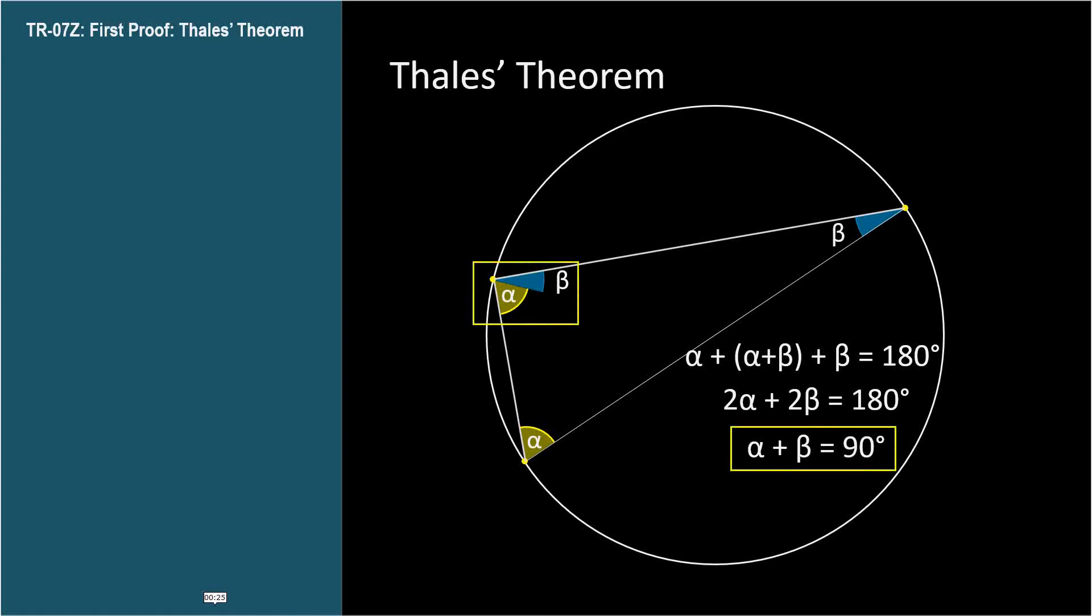And there we have it. This angle at point C is 90 degrees, a right angle. No matter which point we choose for C, our logical steps would be the same, and we draw the same conclusion. The angle at C is a right angle.